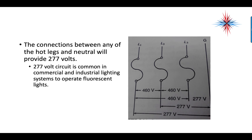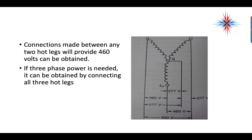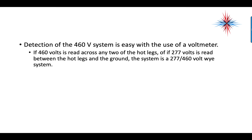Connections between any hot leg and neutral provide 277 volts. 277 volts is common in commercial and industrial systems to operate fluorescent lighting — the fluorescent lights in large shopping malls, department stores, factories, and large commercial applications such as schools are not 120 volts; they are 277 volts. Connections between any two hot legs provide 460 volts, and three-phase power is obtained by connecting all three hot legs. Detection of a 460-volt system is easy: if 460 volts is read across any two hot legs, or 277 volts is read between a hot leg and ground, the system is a 277/460-volt Y system.